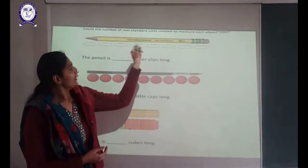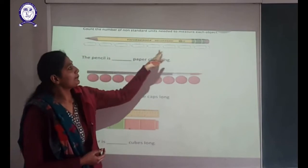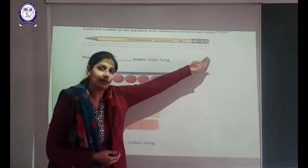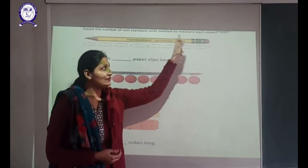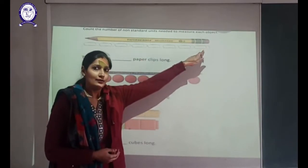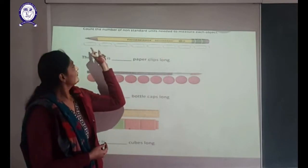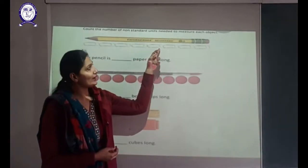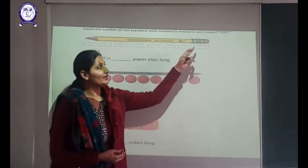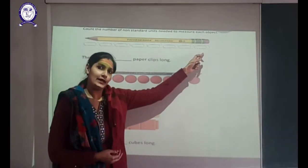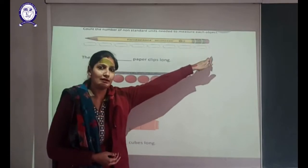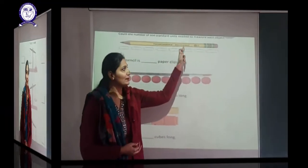This is a pencil and these are paper clips. If we measure the length of the pencil, we need 1, 2, 3, 4, 5, 6, 7, 8 — 8 paper clips to measure the length of this pencil.